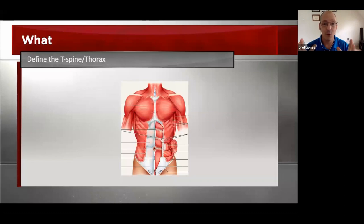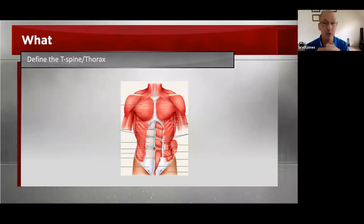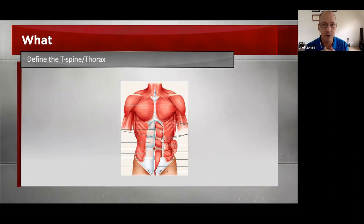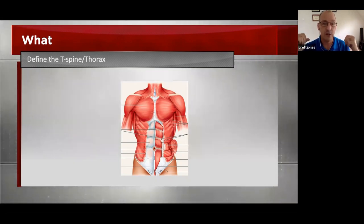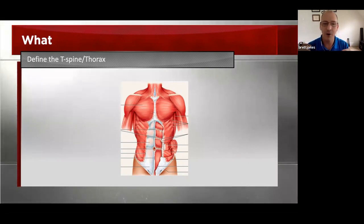When we talk about the thorax and the T-Spine, and when we include the thorax in the conversation, we start including so many other areas. We're talking about how the breathing musculature works with this T-Spine and thoracic area, the abdominal musculature connects in here, a lot of other prime movers, and how the shoulders via the SC joints and the scapulothoracic articulations float and work on this thoracic area.